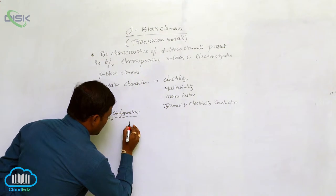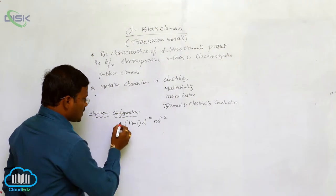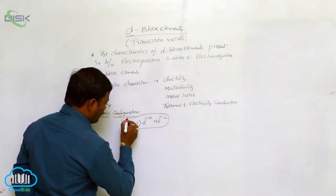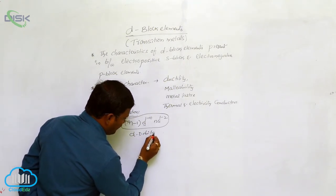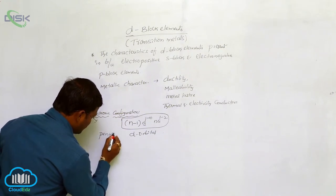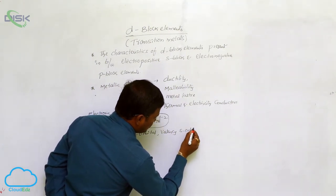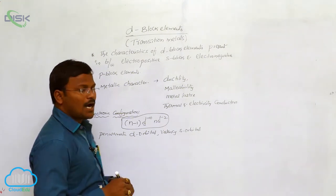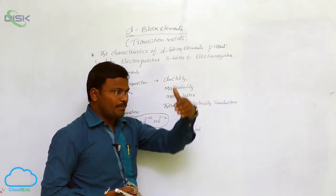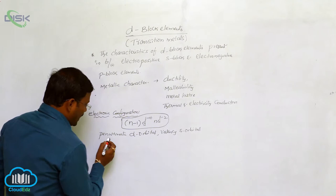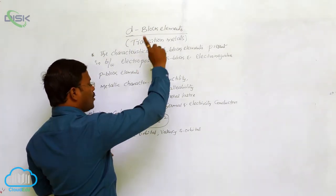The general electron configuration of D-block elements is (n-1)d¹⁻¹⁰ ns¹⁻². Here the D-orbital is the penultimate D-orbital — that is, the orbital before last — present when the valency S-orbital is present. The valency orbit means the last orbit present in an atom. So the penultimate D-orbital together with the valency S-orbital completely gives us the electron configuration for D-block elements.